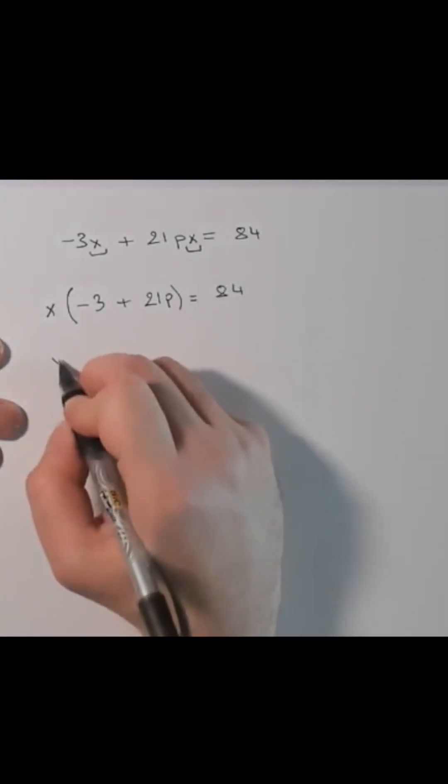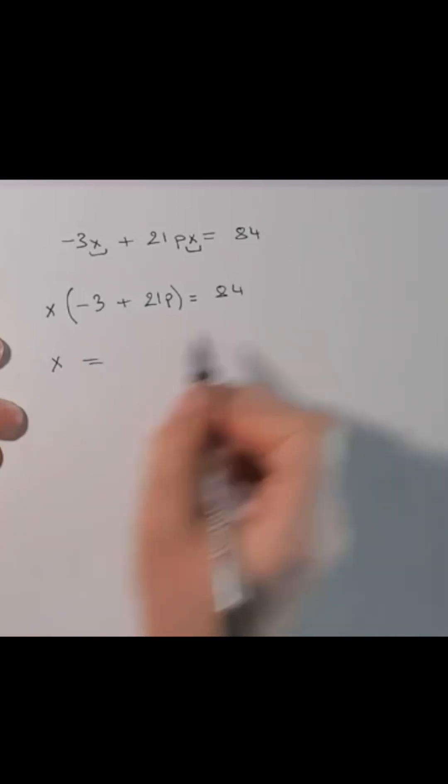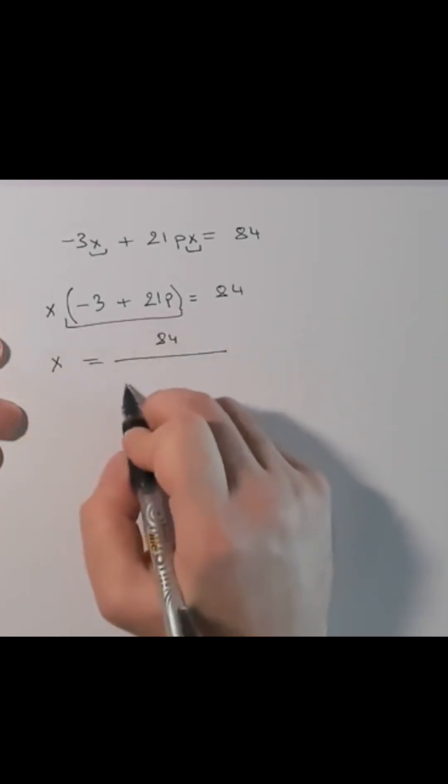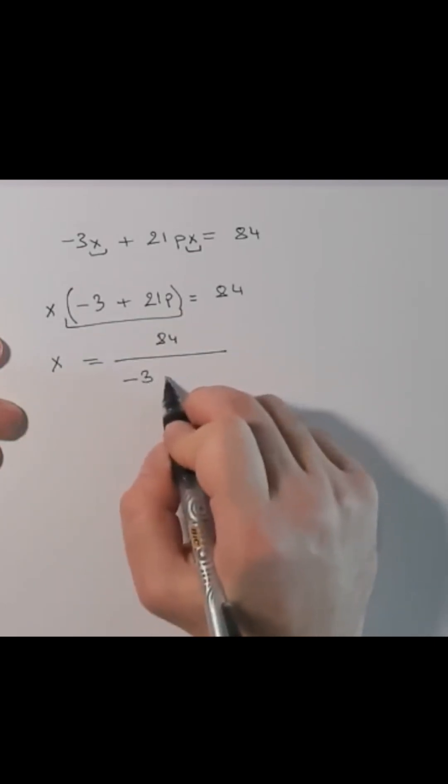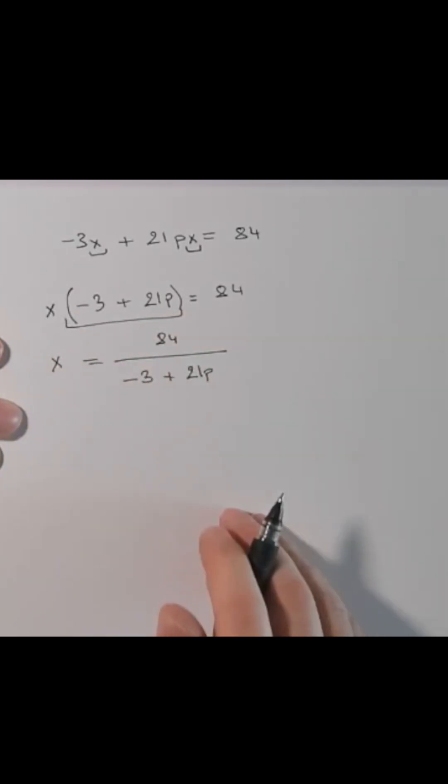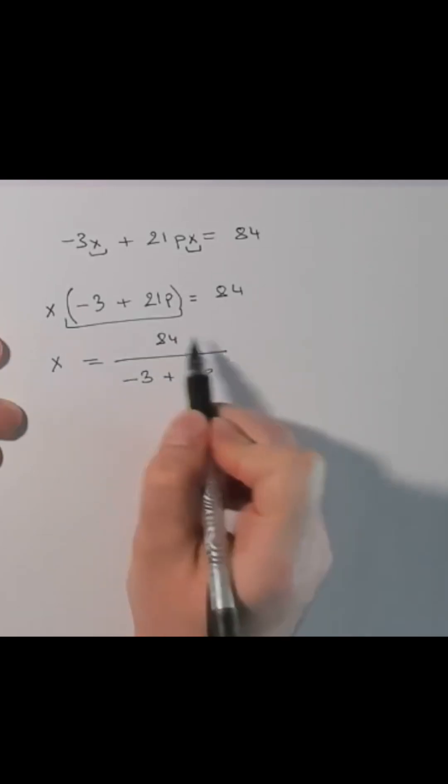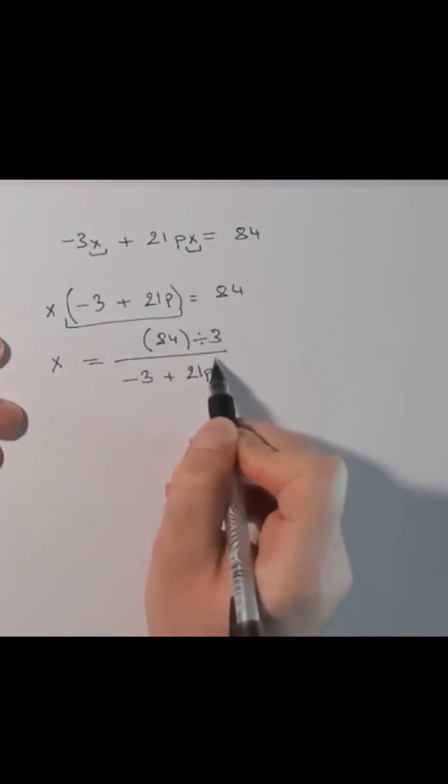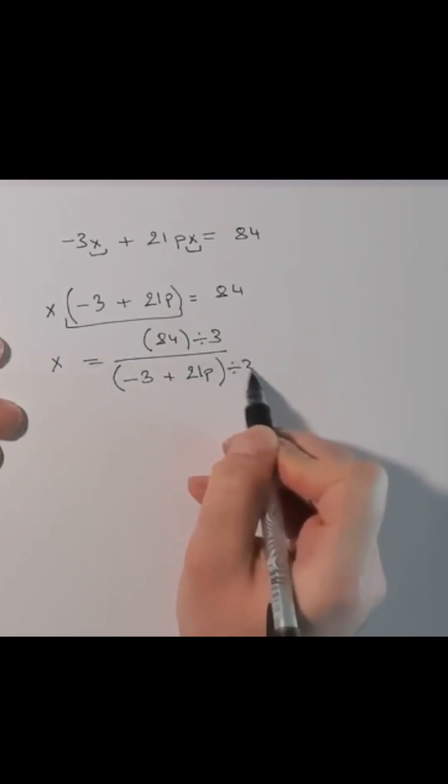Now x is equal to 84 divided by the following value, which is minus 3 plus 21p. We notice something here: dividing up and down by 3.